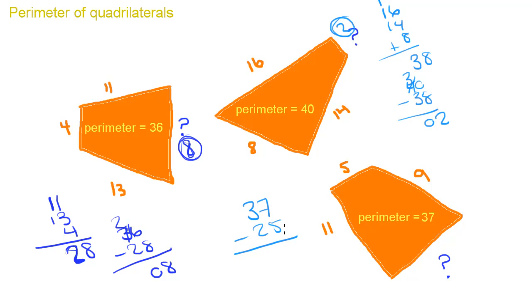And 7 minus 5 is 2. And 3 minus 2 is 1. So we have a side of 12.